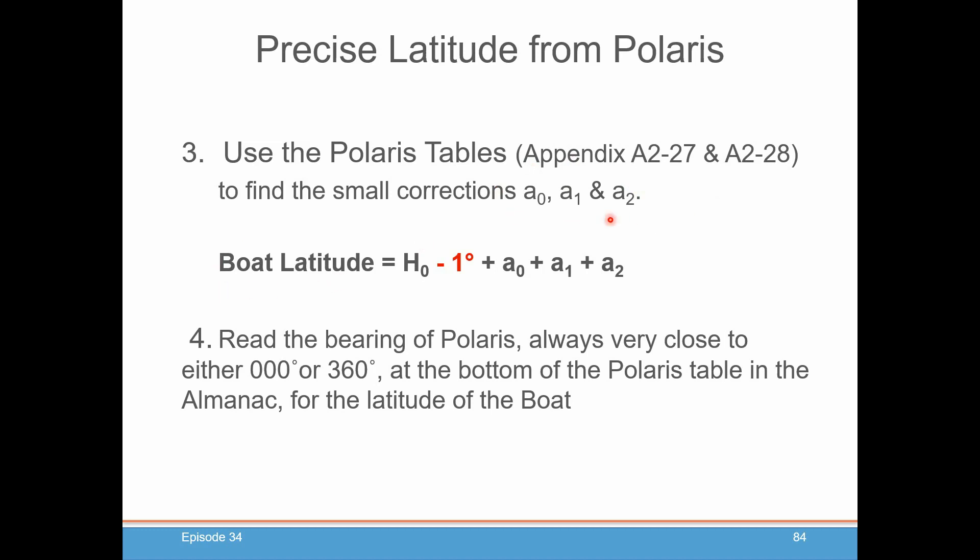Once you get those three numbers, you're going to do a simple calculation. You're going to take the HO that you calculated for your site of Polaris, so above the horizon. You're going to add A0, A1, and A2 together and subtract out one degree. And that will give you your boat latitude very precisely. You can also read the bearing of Polaris, which will always be very close to either 0 or 360 degrees at the bottom of the Polaris table in the almanac for the latitude of the boat that you calculated. And I'll show you what you can use that for.